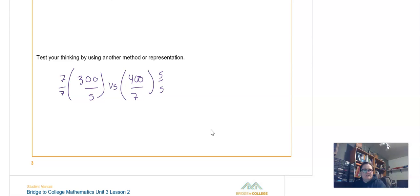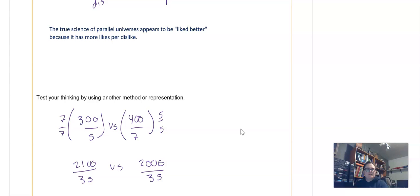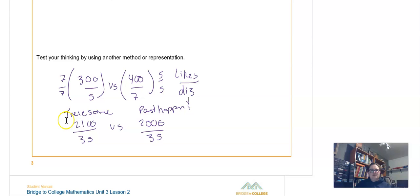So that gives us, I don't know why I'm using a calculator, these are easy numbers. That's 2,100 over 35 versus 2,000 over 35. So, and this is the first one, and again, you gotta just pay attention. So we did likes on top and dislikes on the bottom. So this is showing that if we have 35 dislikes, they both have 35, so the parallel universes one has 2,100 likes for 35 dislikes, and this has 2,000.